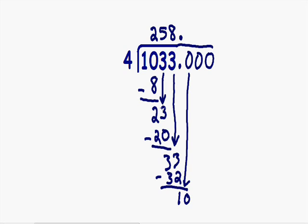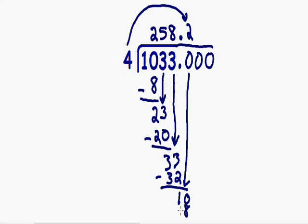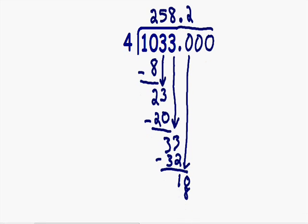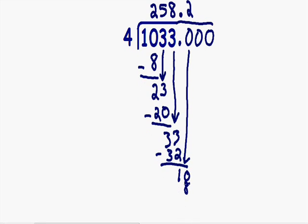How many times does 4 go into 10? 4 goes into 10 two times. 4 times 2 is equal to 8. Now we need to subtract 10 minus 8, which is equal to 2. Notice how our remainder is still not 0, so we need to bring down our next number.